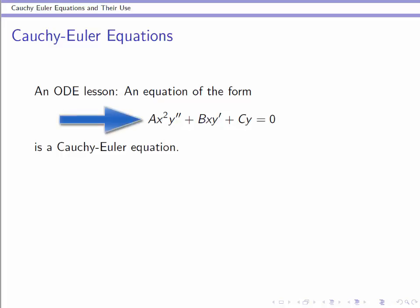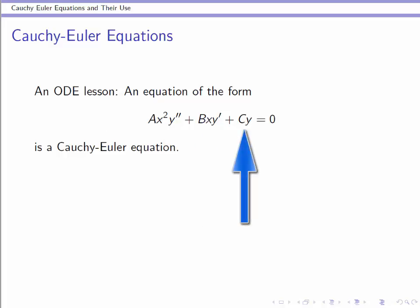On the y double prime term, you have an x squared. On the y prime term, you have an x to the first. And on the y term — which is the zeroth derivative, so to speak — you have an x to the zero. You don't see that because it's just a one. So for every derivative term that's present — the y, the y prime, and the y double prime — you have a power of x in front of it where the power of x matches the order of the derivative. And there you have a Cauchy-Euler equation.